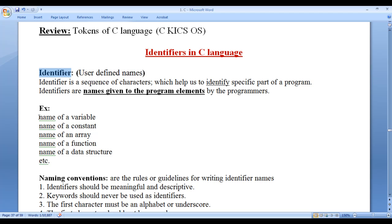For example, name of a variable, name of a constant, name of an array, name of a function, name of a data structure - these are examples of identifiers.